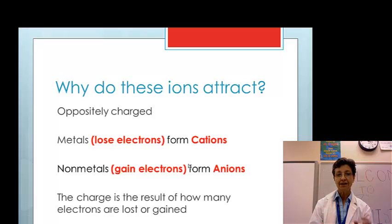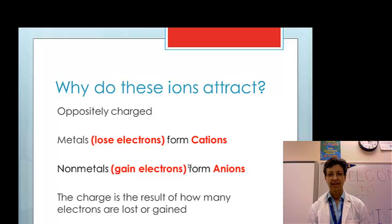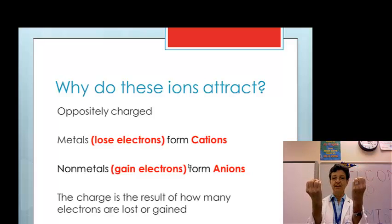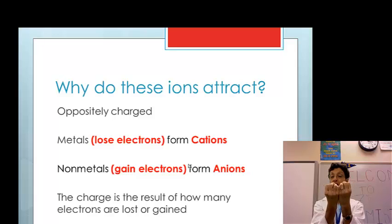Who loses what? Metals tend to lose. Non-metals tend to gain the ones that metals lose. The charge is the result of how many electrons are lost and gained. Once these two atoms, one is positive and one is negative, they attract each other very much because opposites attract. When these positive and negative come together, they form a bond. And that we call an ionic bond.